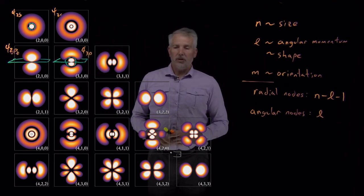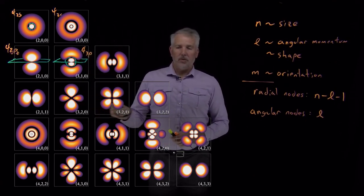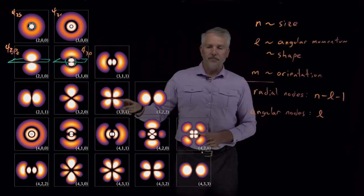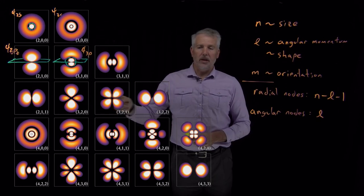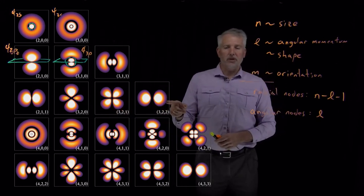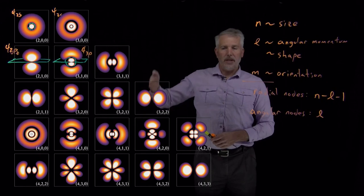A d orbital like this one or this one has two angular nodes. You can see one here and one here. This one also has two angular nodes, but because of the point of view, one is the plane sticking out of the board this way.